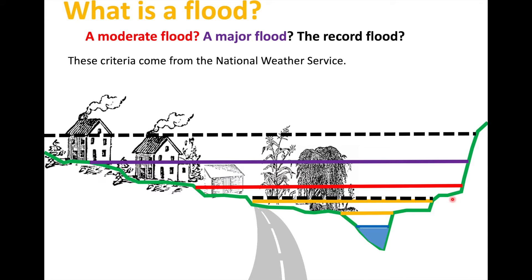For example, if we have a 10-year streamflow record and most of those years haven't had any moderate or major floods, then in year 11 we could have a flood that's still not moderate or major, but it could be the record flood. On the other hand, we could have a 10-year record that happens to include some really large events, meaning we'd need something even more extreme to set a new record.